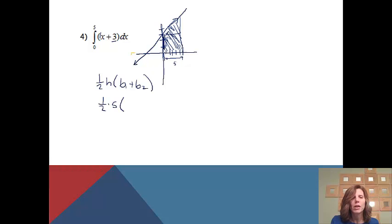If I have this paper turned sideways, the height of my trapezoid is going to be 5. So it's 1 half times 5. Base 1, this is base 1 right here, is 3 units tall. Base 2, if I plug 5 into this function, I would get an answer of 8. So base 2 is 8. I'm going to have 1 half times 5 times 3 plus 8. When I do that, I should get 27.5.